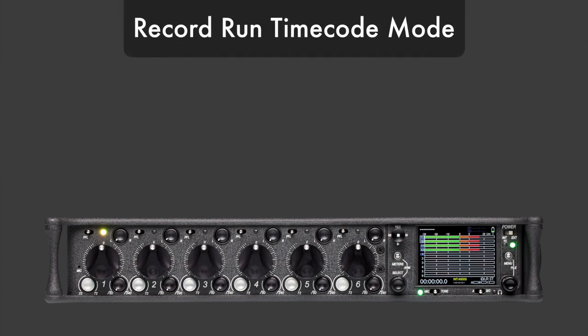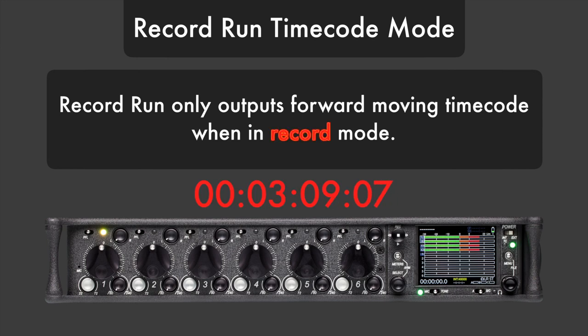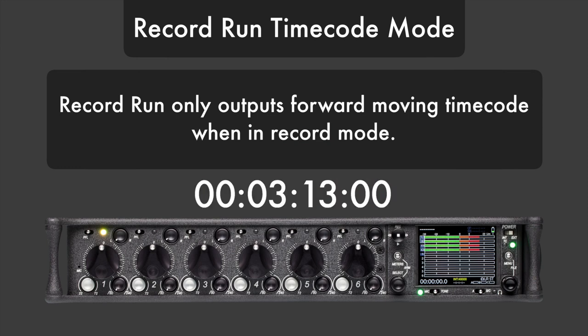Record run timecode mode. Record run is a mode that only outputs forward moving timecode while in record mode. Once record mode is stopped and the recorder enters standby mode, the timecode generator will no longer output forward moving timecode.